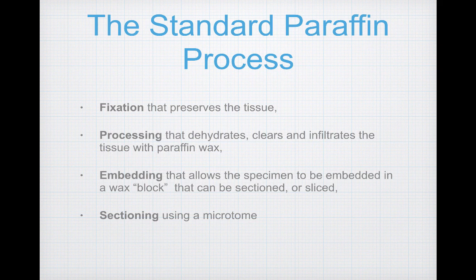The standard preparation process for histological specimens is the paraffin process, and that's what we'll be doing in this lab. Paraffin is a wax — it looks just like candle wax. The paraffin process has four steps. The first is fixation, which preserves the tissue. Next, processing involves the dehydration of the tissue, clears away the tissue, and infiltrates it with paraffin wax. Then there's the embedding step where you embed the sample in a wax block that is then sectioned or sliced using a piece of equipment called a microtome.